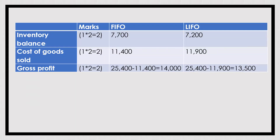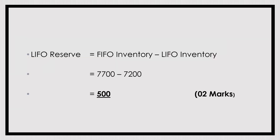Now we calculate the LIFO reserve. LIFO reserve is the difference between the FIFO inventory value and the LIFO inventory value. Taking the closing inventory figures and finding the difference — 7,700 minus 7,200 — we arrive at 500 as the LIFO reserve value. This is the end of question number 3.